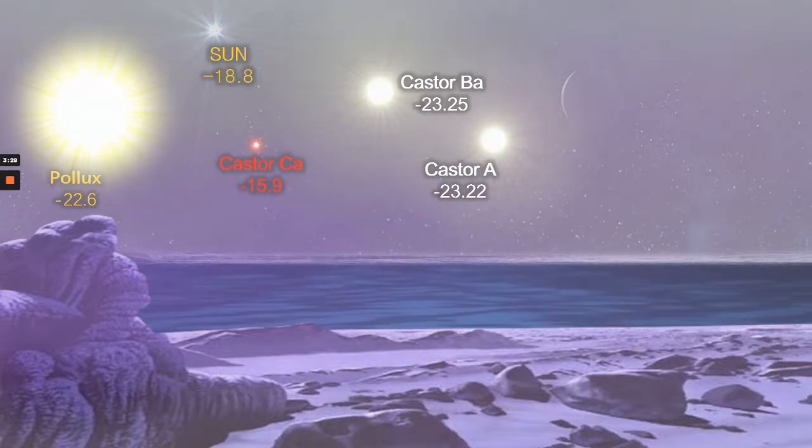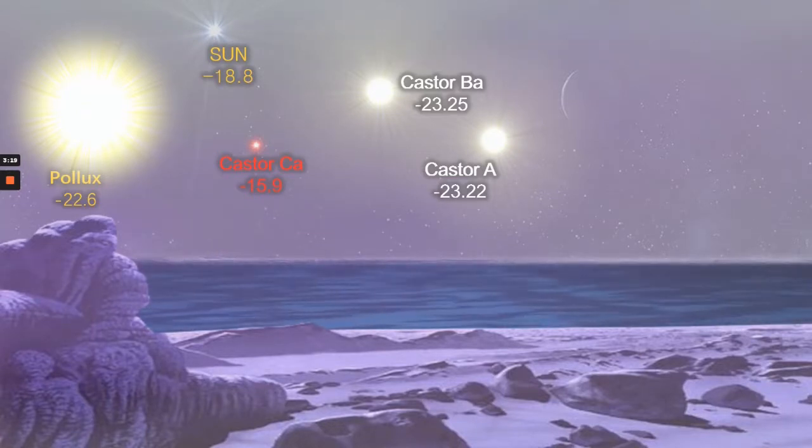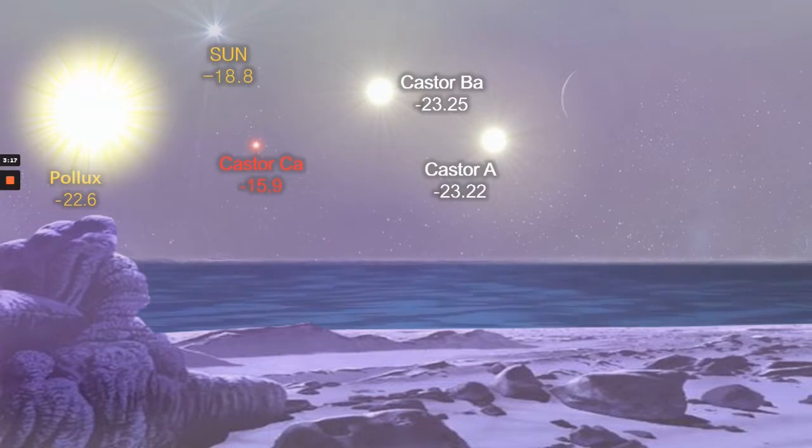Pollux of course does have its own planet known as Thestias. We don't know if rivers flow on Thestias but it was confirmed in 2007 with 2.3 jovial masses and a 590 day orbit as it makes the system an interesting future target for extra planetary telescopy.